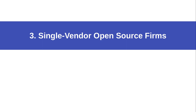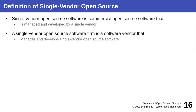Now, on to the first and dominant model in the industry: the single-vendor open source firm. Single-vendor open source software is commercial open source software where there is exactly one vendor behind it. That one vendor develops the software, manages the roadmap, and that one vendor only. The single-vendor open source firm is that single vendor managing this type of software.